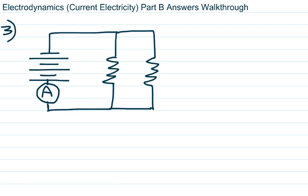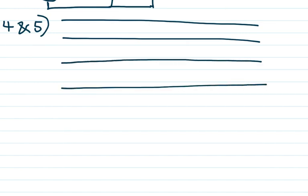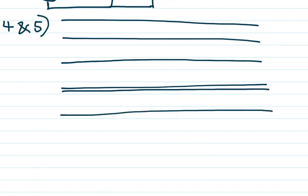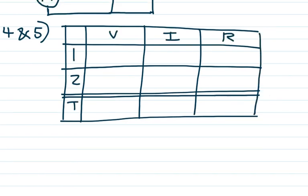Numbers four and five want different things: four wants the total or equivalent circuit resistance, and five wants the total circuit current. I collect information in a table — a row for each element in the circuit (two resistors), plus a bottom row for total values. The columns are voltage, current, and resistance. Before solving anything, identify the type of circuit: parallel.